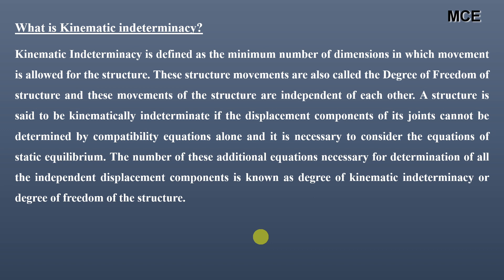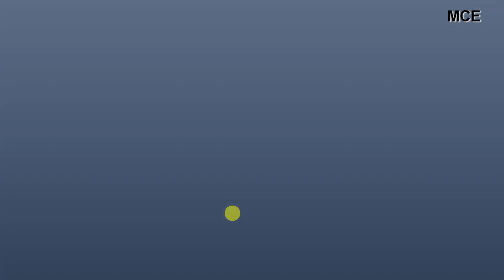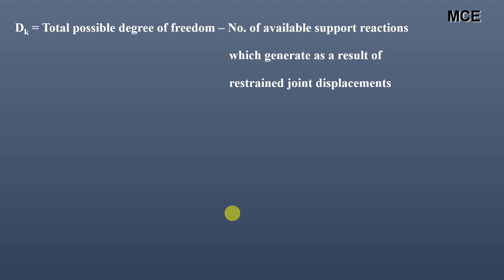The number of additional equations necessary for the determination of these independent displacement components is known as the degree of kinematic indeterminacy, or the degree of freedom of the structure. Represented by dk, for any structure it is given as the total possible degree of freedom minus the number of available support reactions which generate as a result of restraint joint displacement. This is the general formula to find the kinematic indeterminacy of any structure.